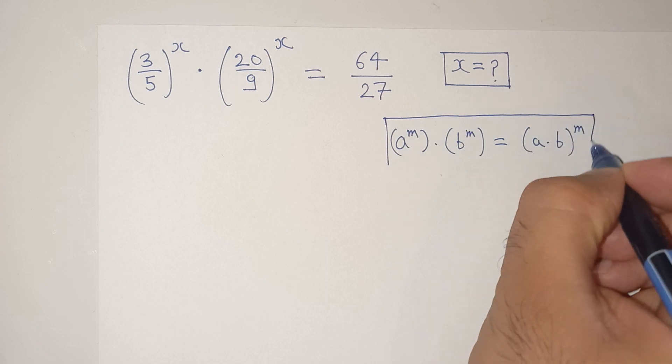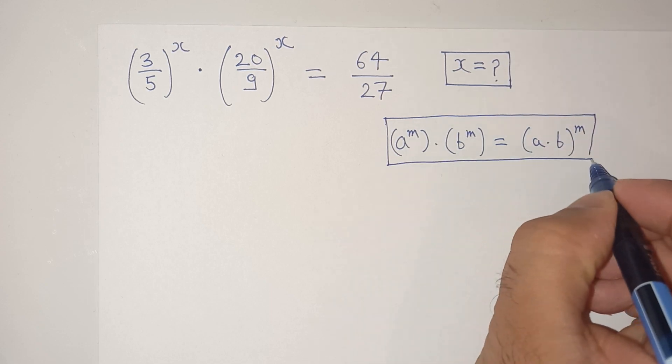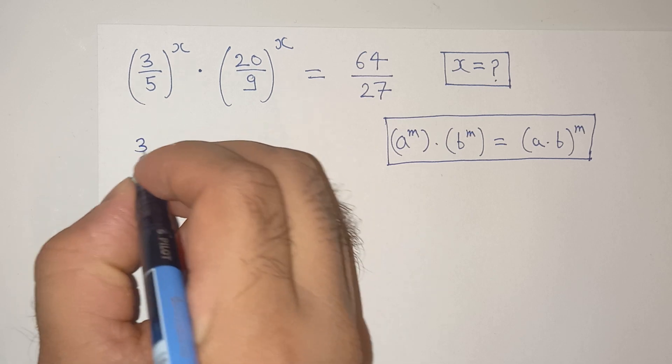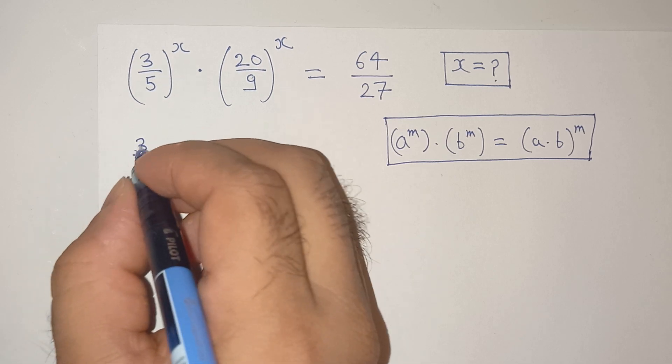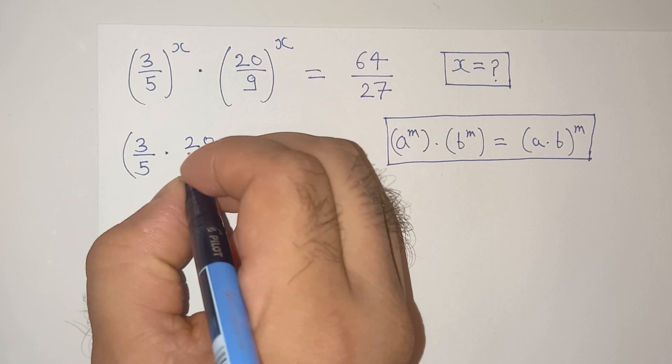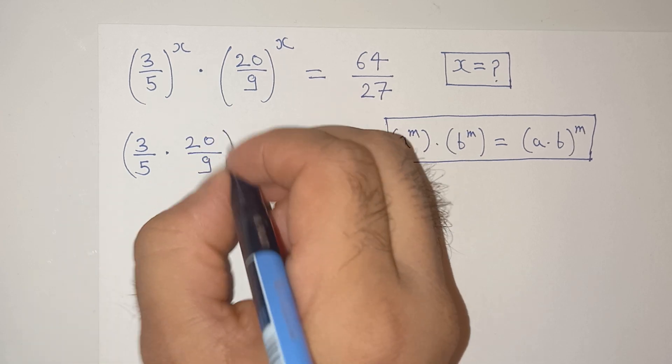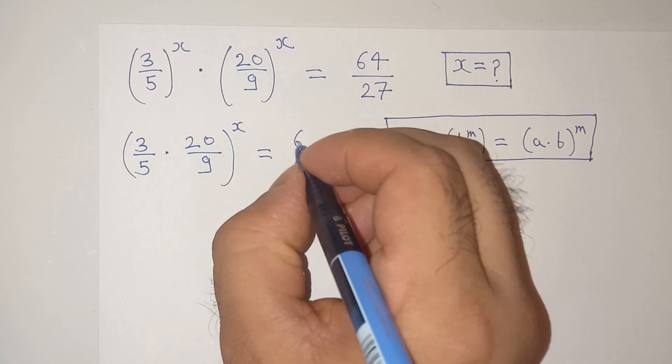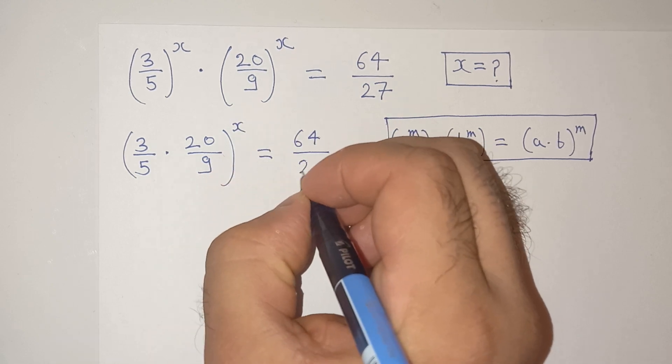According to this exponential rule, we can write this term as 3 by 5 in bracket, multiplied by 20 divided by 9, bracket close, power x equals to 64 divided by 27.